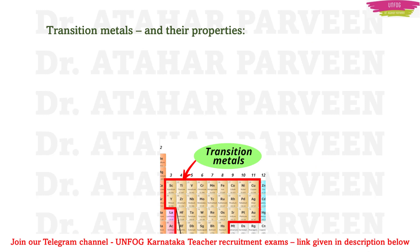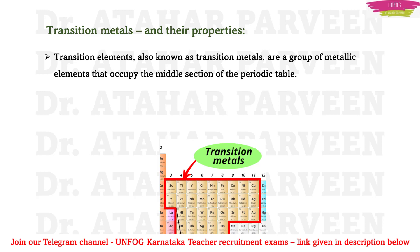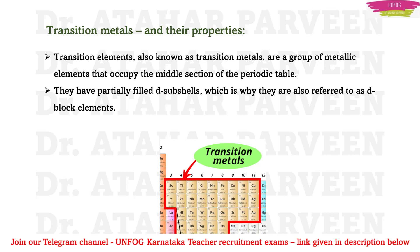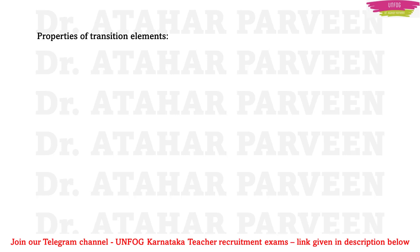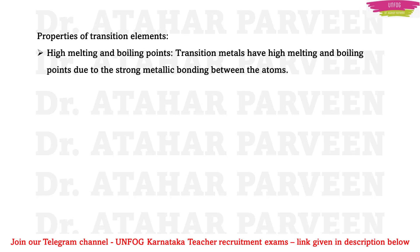Transition metals are also known as transition elements. They are a group of metallic elements occupying the middle section of the periodic table. These transition elements are well known as d block elements because they have partially filled d sub-shells. Common examples include iron, copper, zinc, and nickel.